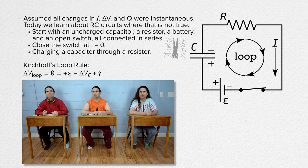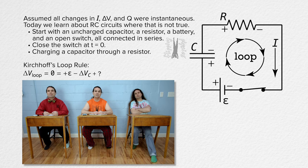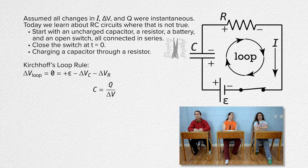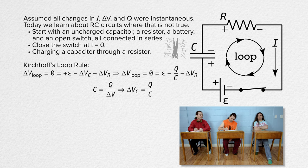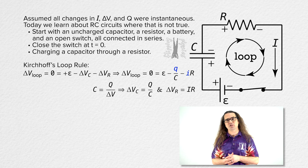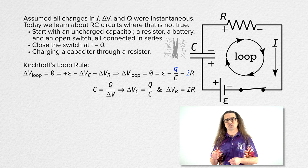Next is the resistor. In a previous lesson, we determined that electric potential goes down when moving in the direction of the current across a resistor, so we subtract the electric potential difference across the resistor. We know capacitance equals charge over electric potential difference, so the electric potential difference across the capacitor equals charge over capacitance. And Ohm's law states that the electric potential difference across a resistor equals current times resistance. We use lowercase q for charge and lowercase i for current because both are changing as functions of time in this Kirchhoff's loop rule equation.